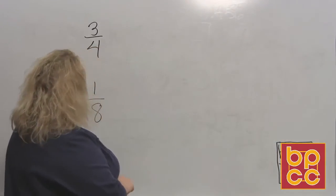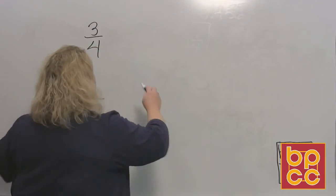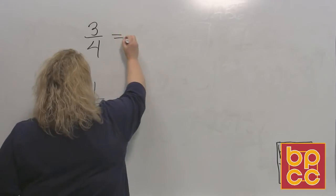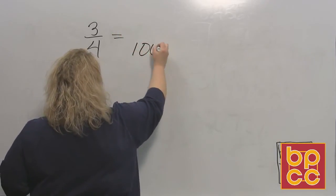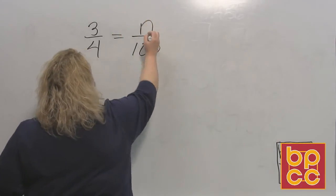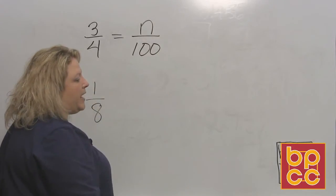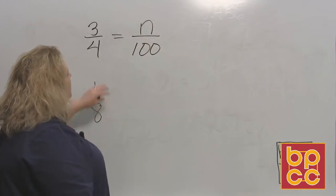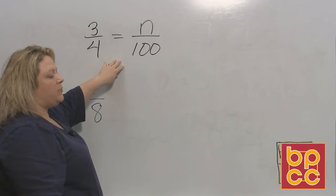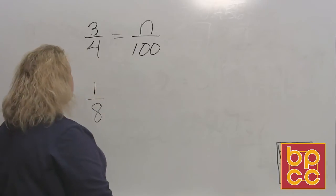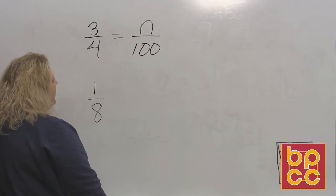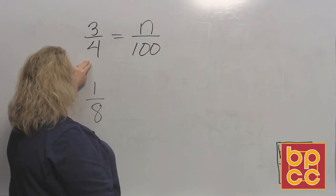Okay, so the first one, 3 fourths, I'm going to set this equal to n over 100 because remember percents are always out of 100. And we don't know what 3 fourths would be as a percent out of 100. So we're going to use cross products. In one of the previous modules, I showed you how to do this.